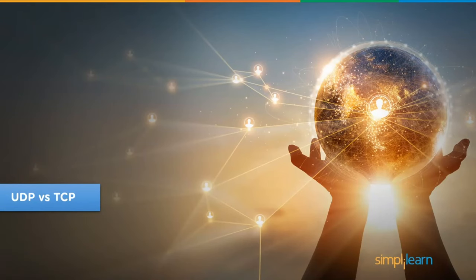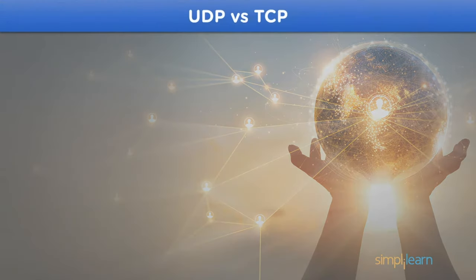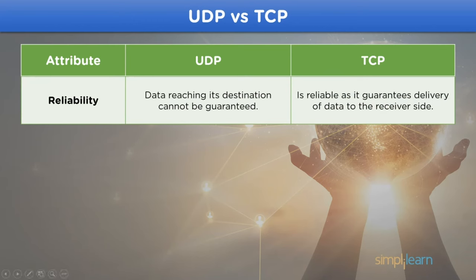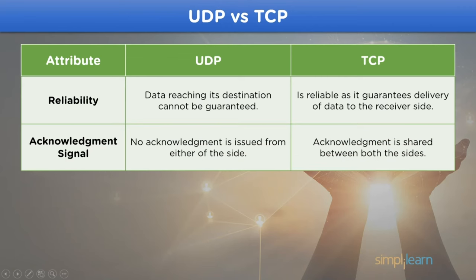Now let's move on to UDP versus TCP protocol. We will differentiate between UDP and TCP based on attributes commonly used in a network model. The first attribute is reliability: UDP is unreliable in nature — it does not guarantee that data transmitted reaches the destination. TCP, on the other hand, provides reliable and guaranteed data delivery. The next attribute is acknowledgement: UDP does not provide any acknowledgement from receiver to sender, whereas in TCP, sharing the acknowledgement signal is very important — if not shared, data exchange will halt.